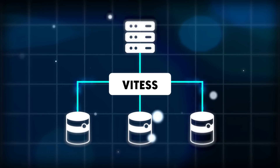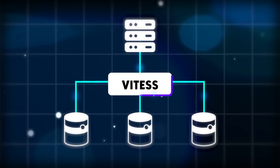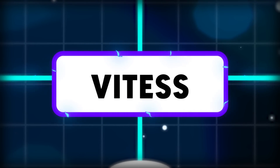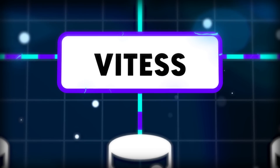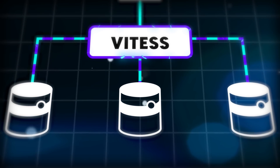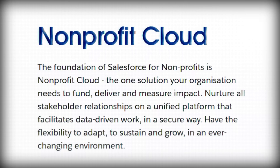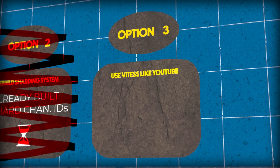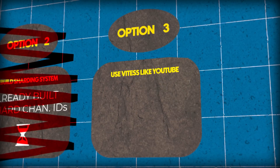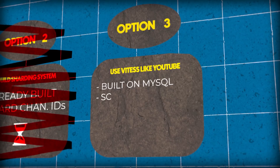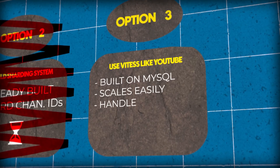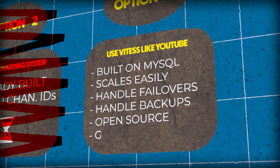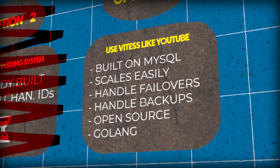Vitess serves as a proxy between your application and the database to route and manage database interactions, so you don't have to include that logic in your application code. It's completely MySQL compatible. Vitess joined the nonprofit Cloud Native Computing Foundation in 2018. The Slack engineers evaluated Vitess and checked off all their requirements: built on top of MySQL, easy to scale their existing operation, able to handle failovers and backups, and most importantly open source and built with Go — so if something needed to be extended, they could do it themselves.